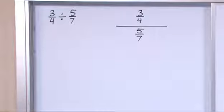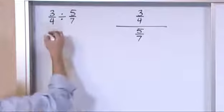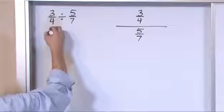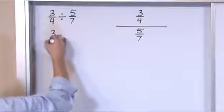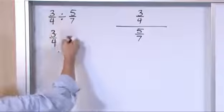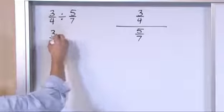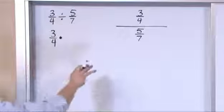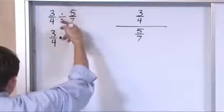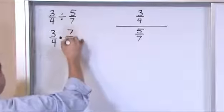Here's all you do when you're confronted with a division problem. You take the first fraction, you write it down: 3 fourths. You change this division into a multiplication. You can do that. But then you take the second fraction, you flip it over: 7 fifths.